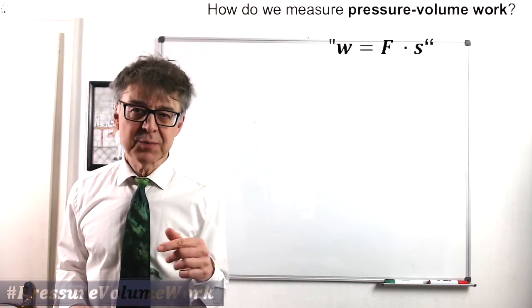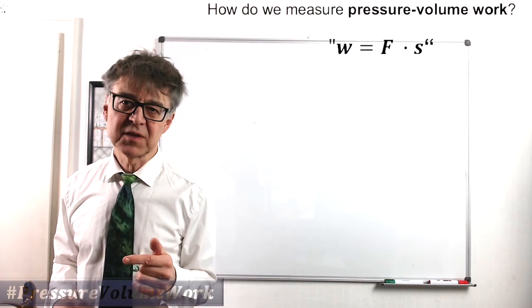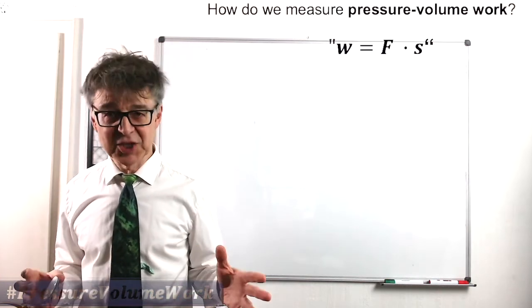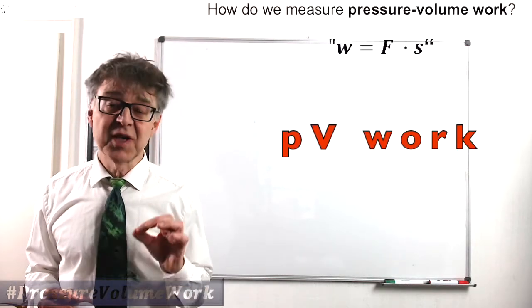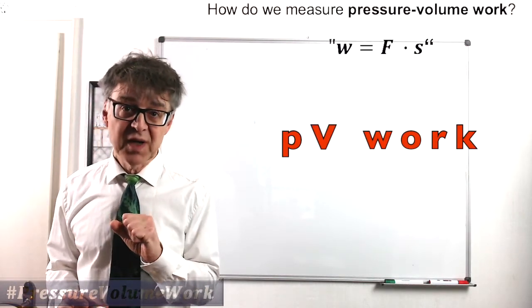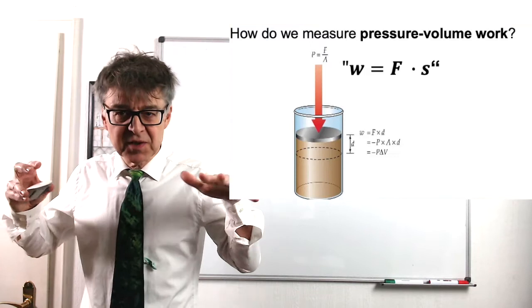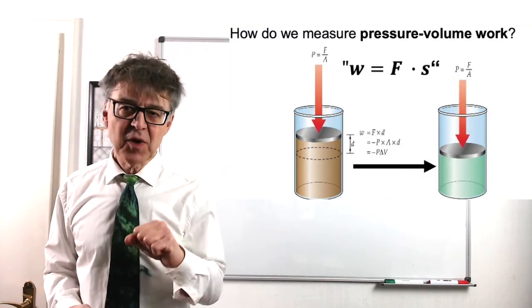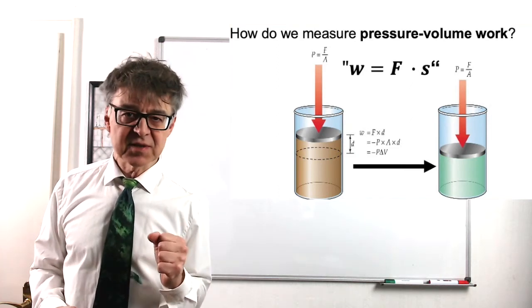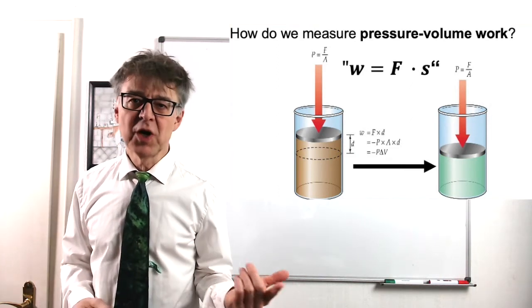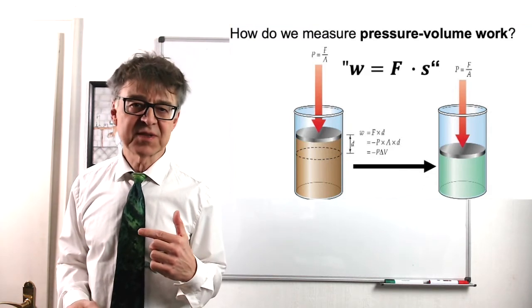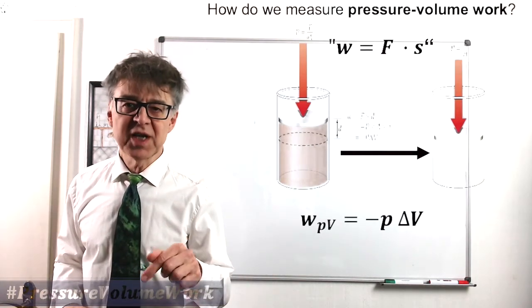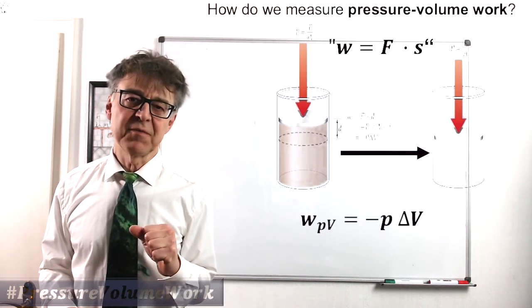In thermodynamics, pressure-volume work is particularly important. Whenever the volume of a system changes, becomes smaller or becomes larger, we have to take into account PV work. External pressure exerts a force on the system. If its volume changes, this force acts upon a certain distance. So the classical equation work equals force times distance translates into pressure-volume work equals negative external pressure times delta V.